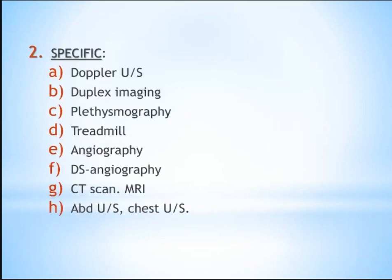For specific investigations, we have Doppler ultrasound, duplex imaging, or plethysmography. Plethysmography measures change in the volume of blood vessels, and has many types: ocular, abdominal, upper limb, or lower limb plethysmography.